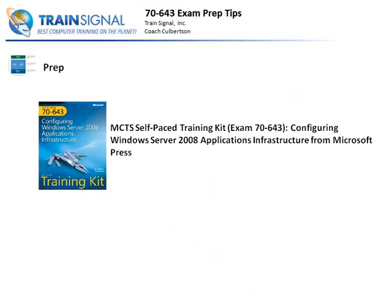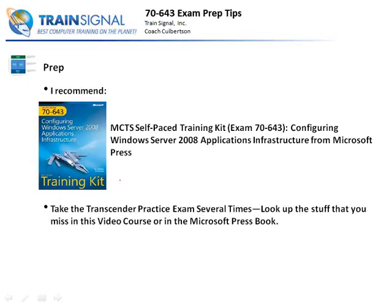Let's talk about preparation. I recommend the MCTS Self-Paced Training Kit — it's available from Amazon, Barnes & Noble, Borders, wherever you have a bookstore; it's a really good reference book. Rather than read it straight through, use it more as a reference manual, since a lot of what I've covered in this video series is in that book — and in some places I've actually shown you more. Also included with this course is a Transcender Practice Exam. One of the best ways to prepare is to take the Transcender Practice Exam several times, and then look up the stuff you keep missing in this video course or in the Microsoft Press book.